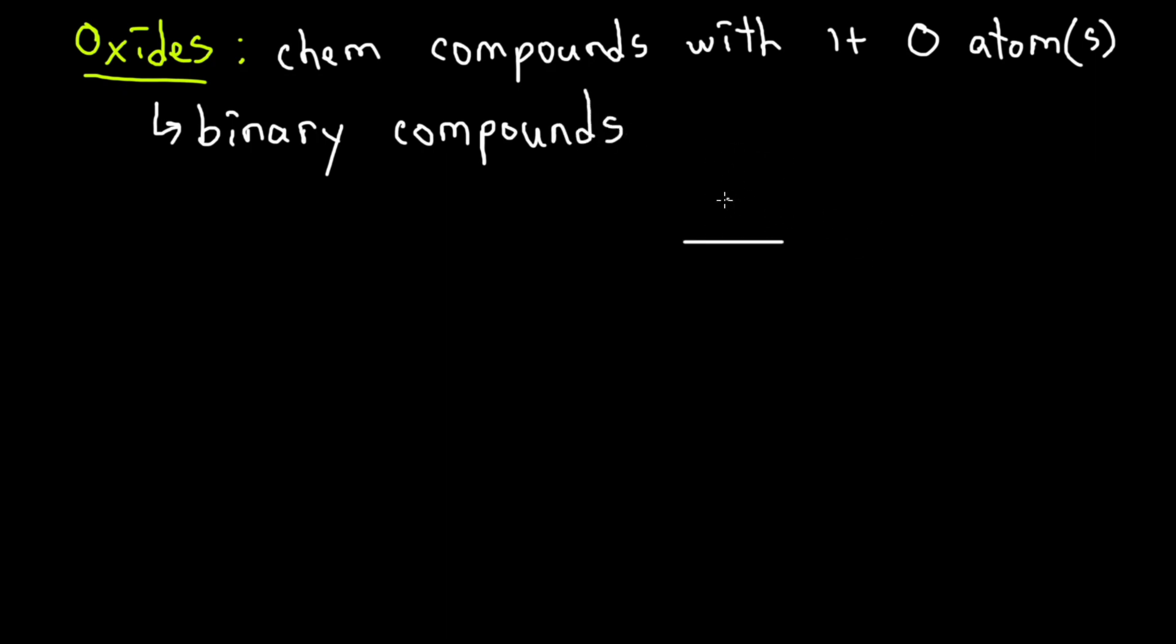So you've got some sort of element whether a metal or non-metal and an oxide. Binary meaning that you have two things, one and two combined together in one compound.